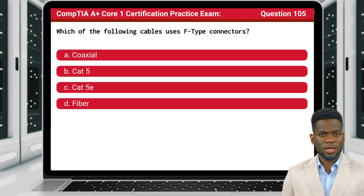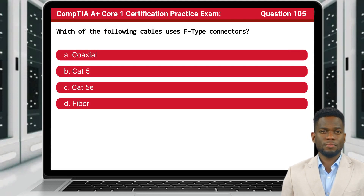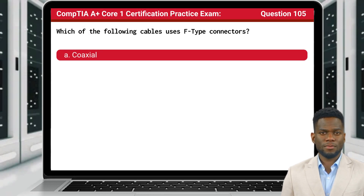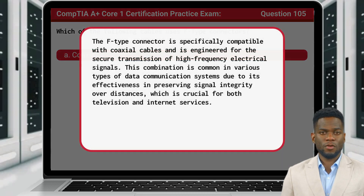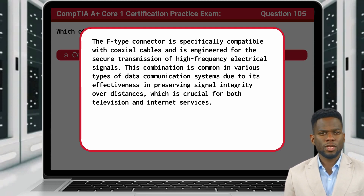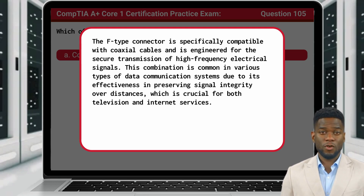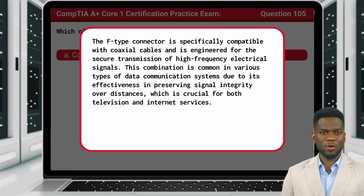Question 105: Which of the following cables uses F-type connectors? The answer is A: Coaxial. The F-type connector is specifically compatible with coaxial cables and is engineered for the secure transmission of high-frequency electrical signals. This combination is common in various types of data communication systems due to its effectiveness in preserving signal integrity over distances, which is crucial for both television and internet services.